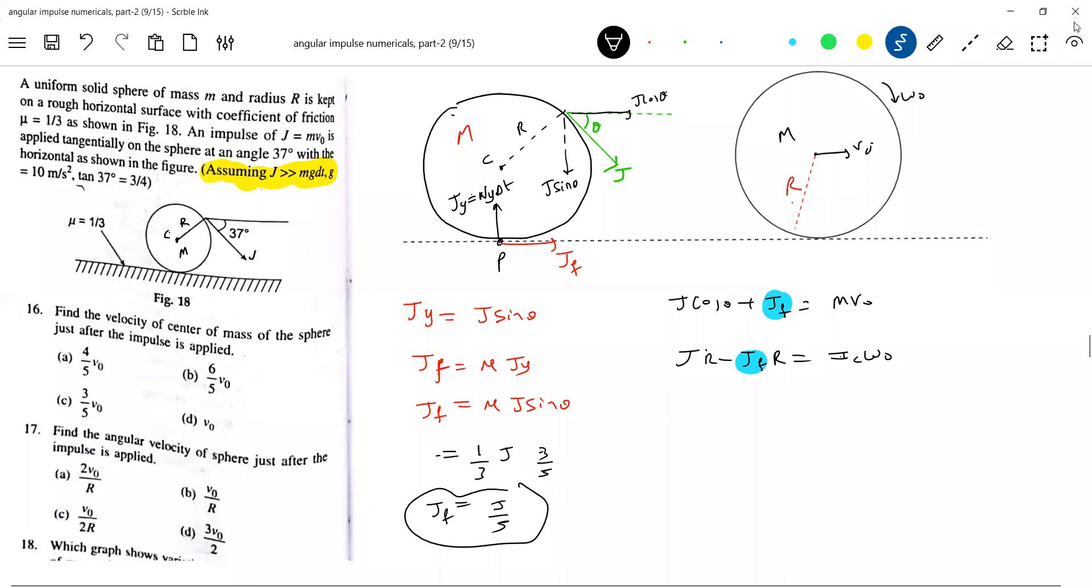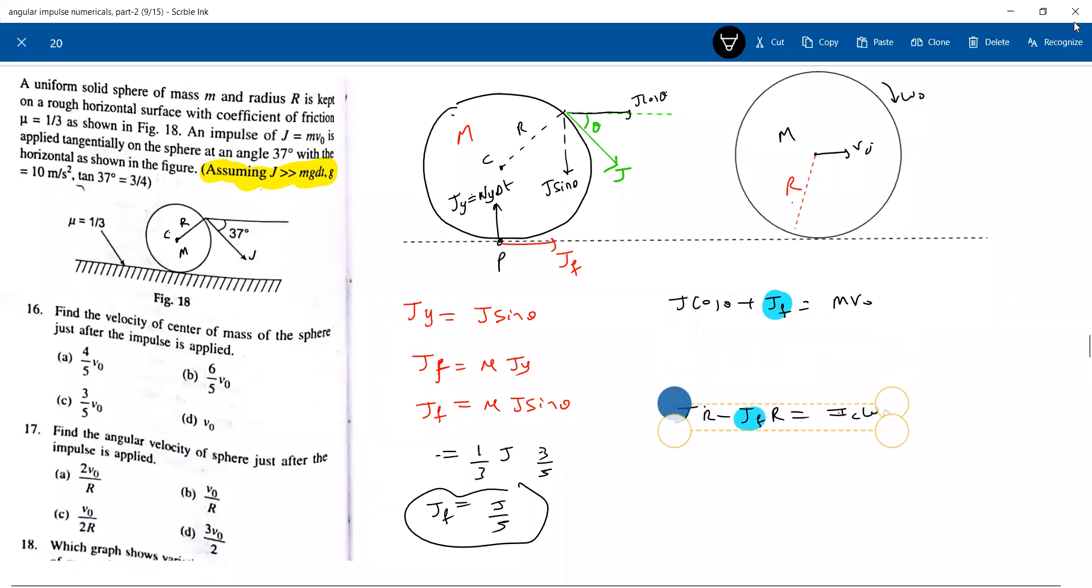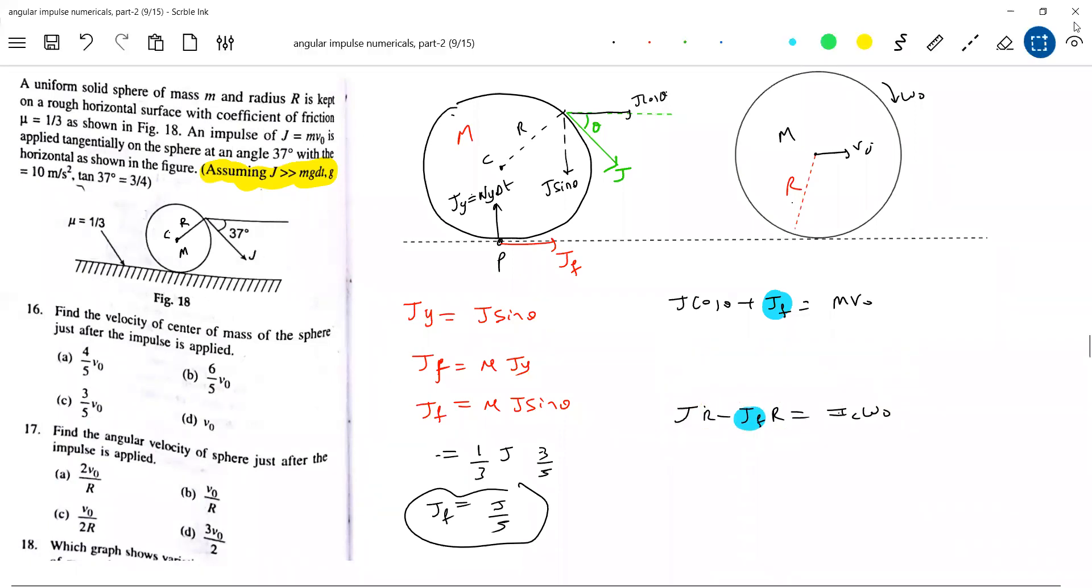Let me write J only here. So substituting first, solve it one by one. J cos theta, cos 37 is 4 by 5. Jf, J by 5 is equal to m v naught. J equal to m v naught is what I'll conclude here.